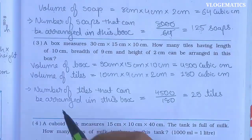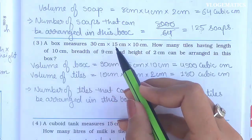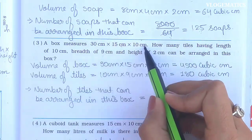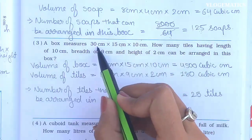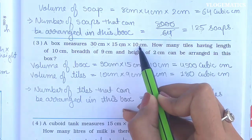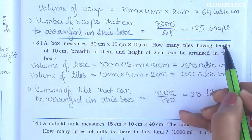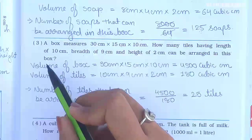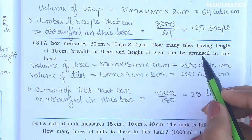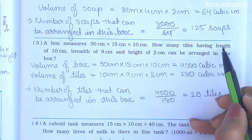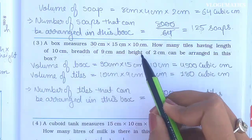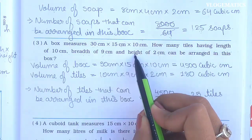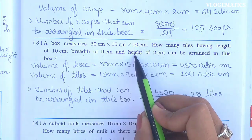Number 3: A box measures 30 cm by 15 cm by 10 cm — again a cuboid, because length, breadth, and height are different. How many tiles having length 10 cm, breadth 9 cm, and height 2 cm can be arranged in this box? We need to find how many tiles fit. We will find the volume of the box, the volume of the tiles, and then divide.